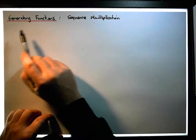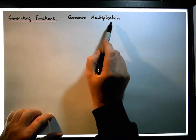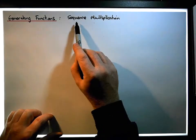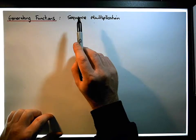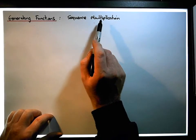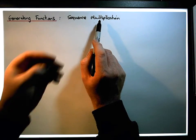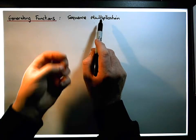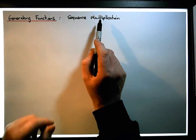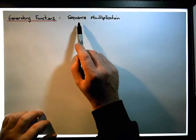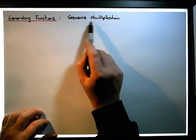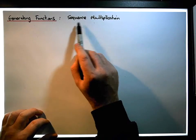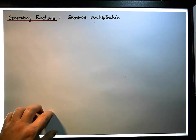It's going to look at sequence multiplication, and in particular, given two sequences, what does the product of those two sequences look like? In other words, what does the sequence generated from the product look like, and more importantly, what is the generating function associated with the product of those two sequences?